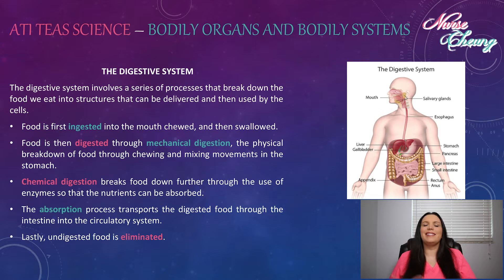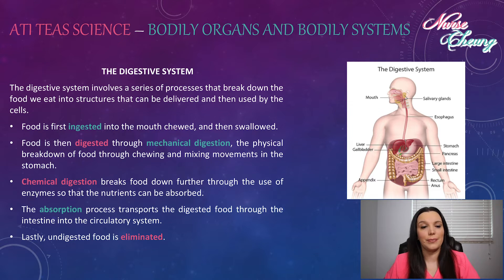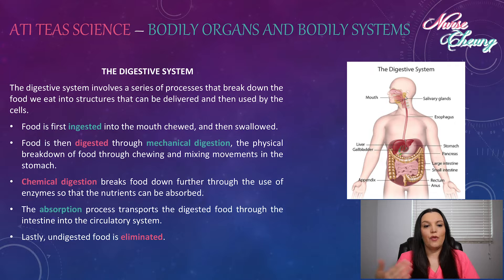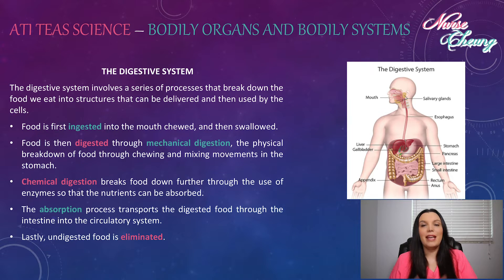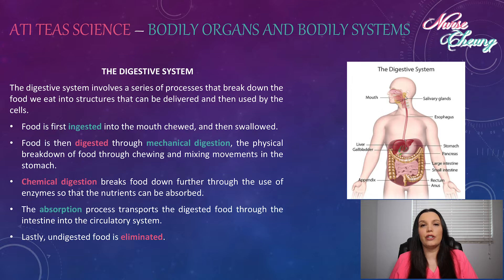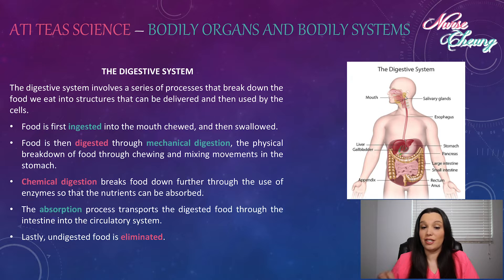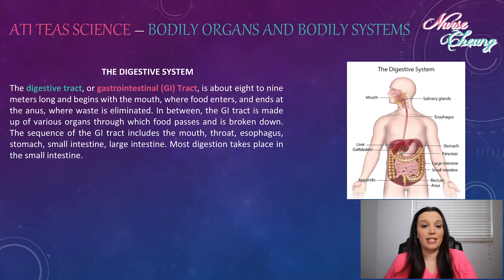The digestive system involves a series of processes that break down the food we eat into structures that can be delivered and then used by the cells. Food is first ingested through the mouth, chewed, and then swallowed. Food is then digested through mechanical digestion — the physical breakdown of food through chewing and mixing movements in the stomach. Chemical digestion breaks it down further through the use of enzymes so that nutrients can be absorbed. The absorption process transports the digested food through the intestines into the circulatory system. Lastly, undigested food that's not necessary is eliminated.